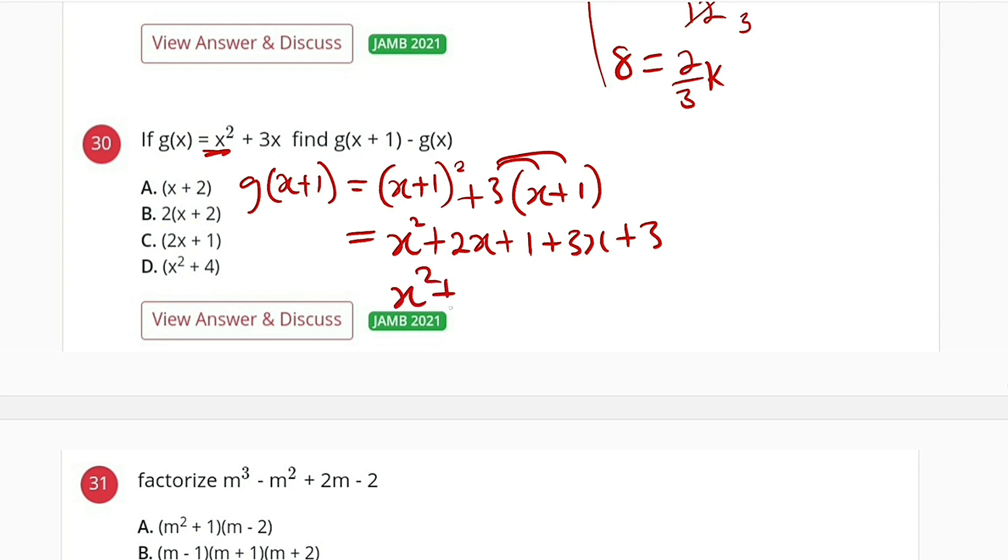This will give us x squared plus 2x and this will give us 5x. And 1 and this will give us 4. So this is g of x plus 1.